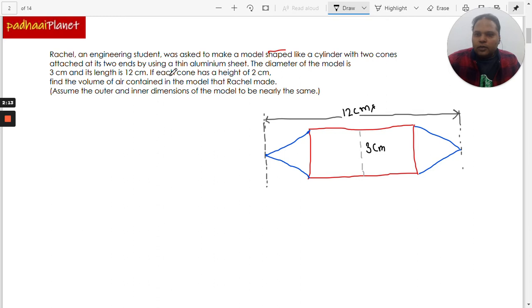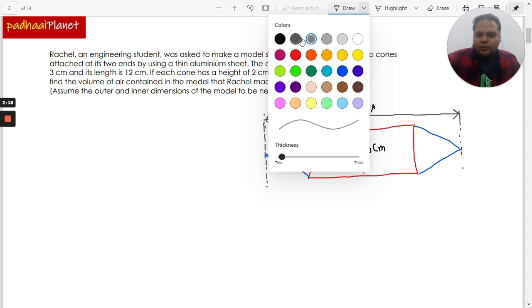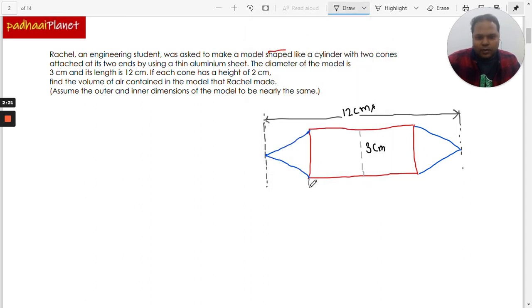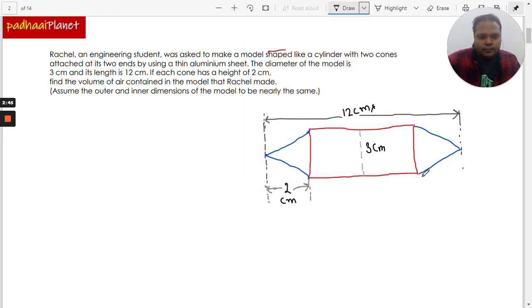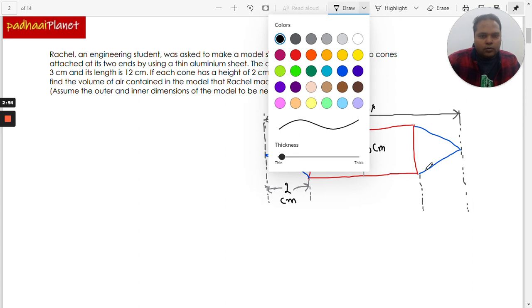Now what it's also saying is if each cone has a height of 2 centimeters, that means let's further mark it. This particular distance is 2 centimeters. So this is 2 centimeters. Similarly, this side is also 2 centimeters.